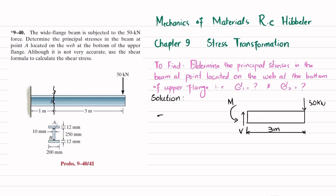To find the shear force, we apply the sum of all forces in the Y direction equal to zero, taking upward as positive. V is acting upward and 50 kN is acting downward, so their sum equals zero, meaning the shear force V is equal to 50 kN.